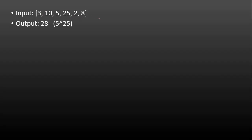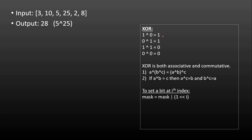Before going into the example, let's quickly refresh XOR properties. When you do 1 XOR 0 you get 1; 0 XOR 1 is 1; 1 XOR 1 is 0; and 0 XOR 0 is 0. So any two different binary digits XOR'd will always give 1, and if both digits are the same it will always be 0.